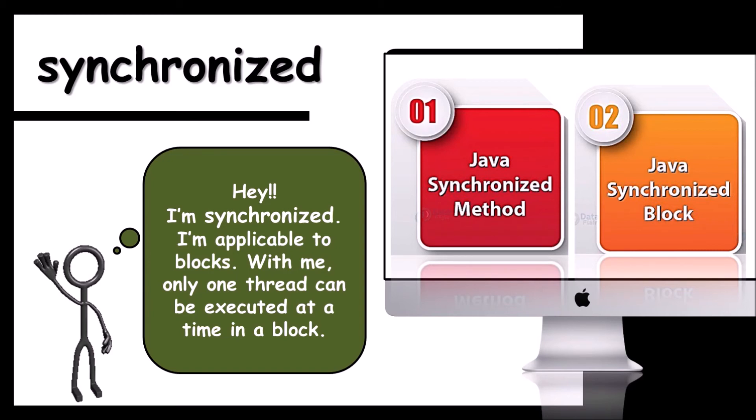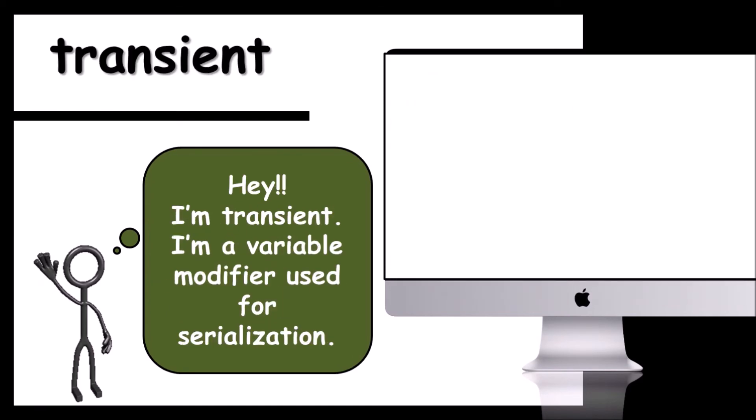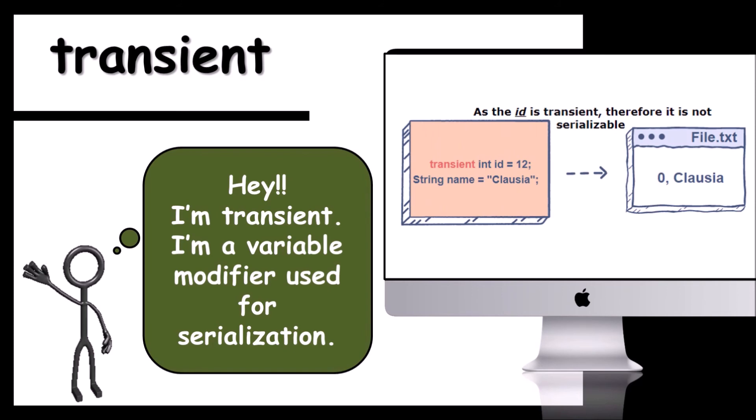Next comes transient. Hey, I'm transient. I'm a variable modifier used for serialization. In this example, as the ID is transient, therefore it is not serializable. Attributes and methods are skipped here when serializing the object containing them.